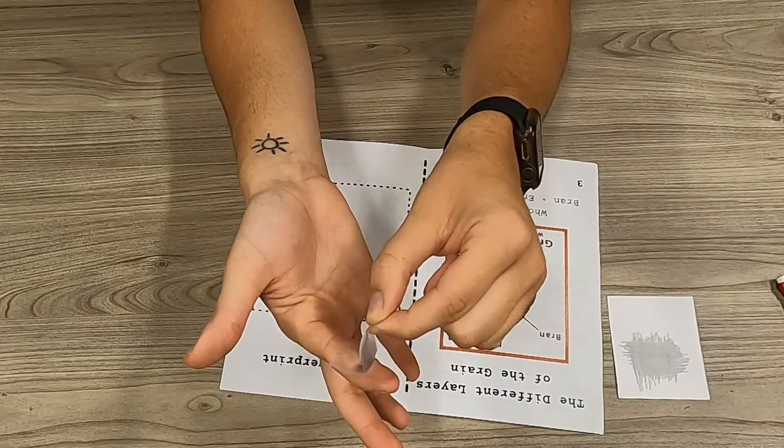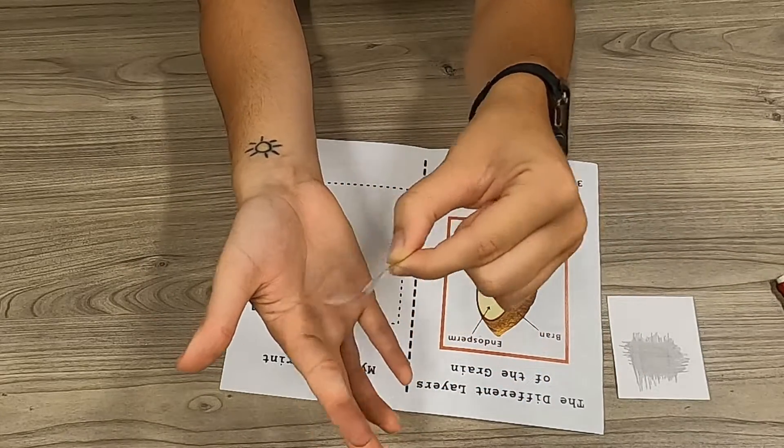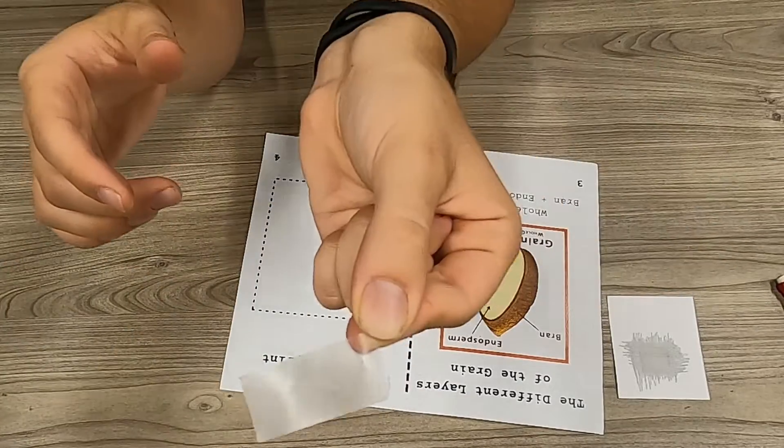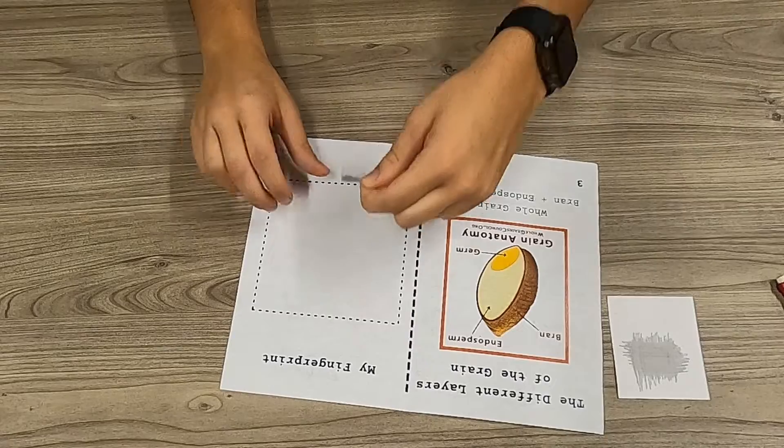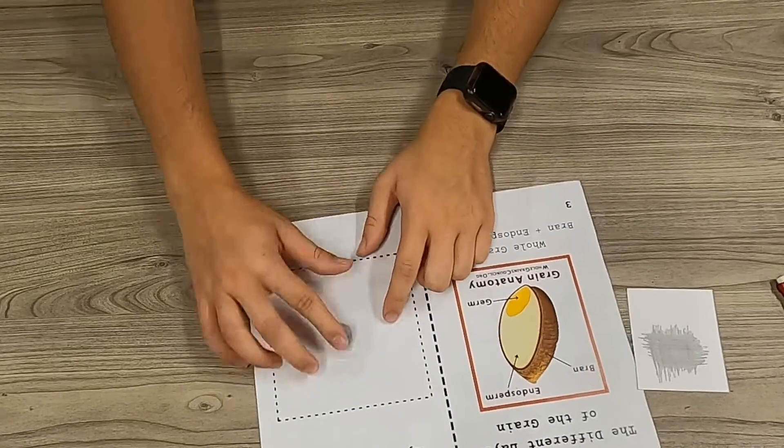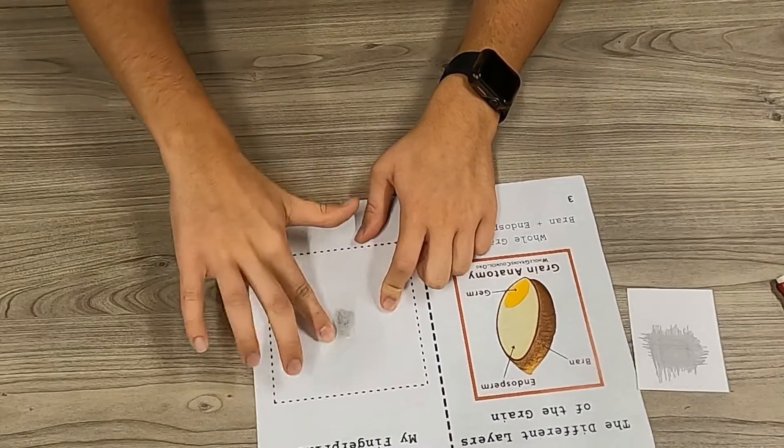Peel the tape up slowly and carefully. You can see that most of the pencil has now gone from my finger to the tape. Now the tape is going to go on the fingerprint part of the handout on page four.